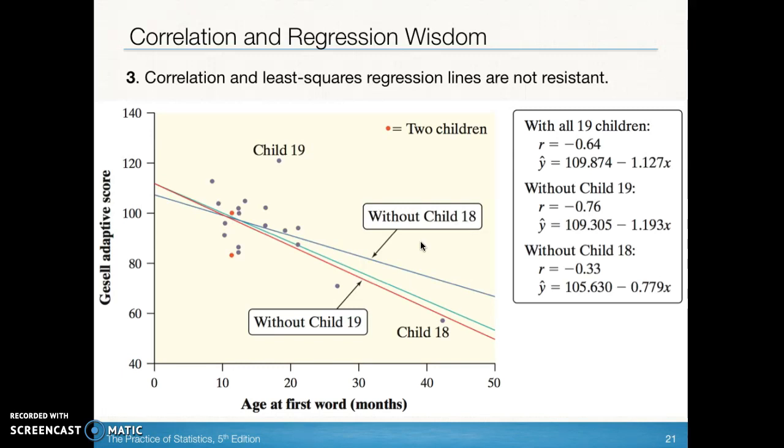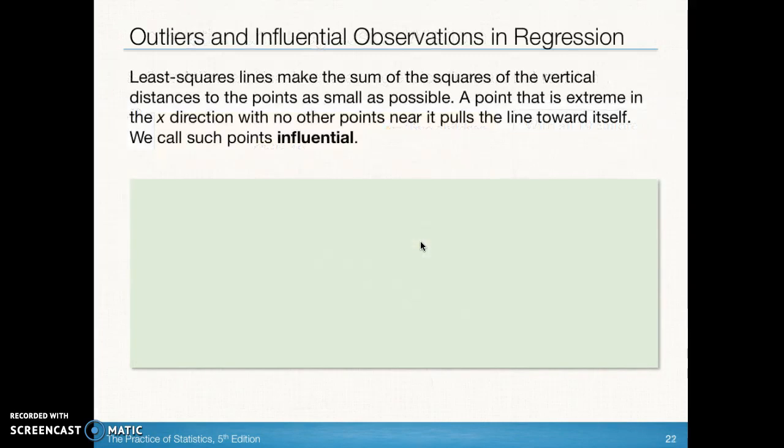Correlation and least squares regression lines are not resistant. They're going to change when you change the points that you have, when you add in a point or take away a point. Let's talk about outliers and influential observations.